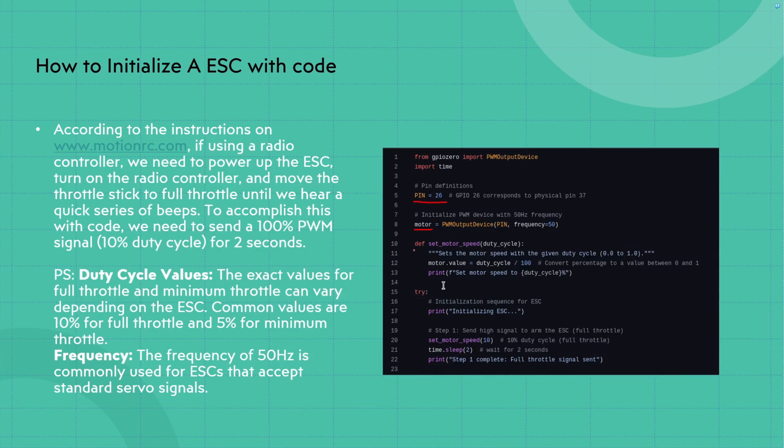And you can see that we're actually making a variable called motor right here. And that variable is representing PWM output device with our pin number and also the frequency that we're going to be using, which is at 50 Hertz. You can actually see we have a function right down here. And what this function is actually doing is setting our PWM signal that we're going to be sending out to the ESC.